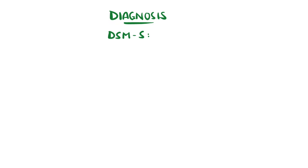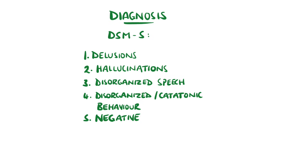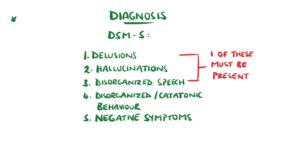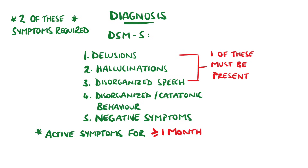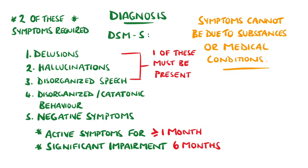According to the DSM-5, for a diagnosis of schizophrenia to be made, at least two diagnostic symptoms must be present. These are delusions, hallucinations, disorganized speech, disorganized or catatonic behavior, or negative symptoms. One of the two symptoms must be delusions, hallucinations, or disorganized speech — meaning you don't have to have delusions or hallucinations to be diagnosed. The two symptoms need to have been actively present for most of the time for one month, with a significant impact on functioning for at least six months. The symptoms should not be the result of substance abuse or other medical conditions, and schizoaffective, bipolar, or depressive disorder with psychotic features must have been ruled out.